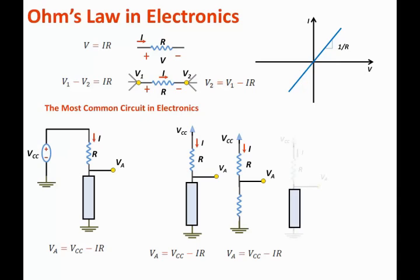The box may also be replaced by any electronic element. For example the box may represent a diode. A diode is a two terminal electronic device. And again if the current is flowing through the resistor downward then the voltage at VA is VCC minus the voltage drop across the resistor. Or we can state that VA is equal to VCC minus I times R.